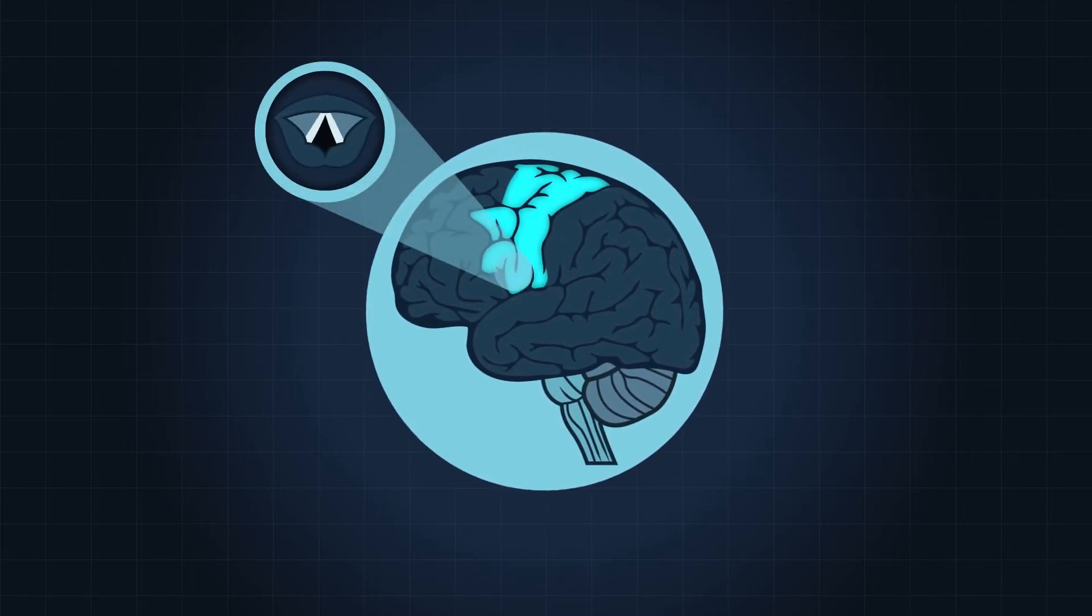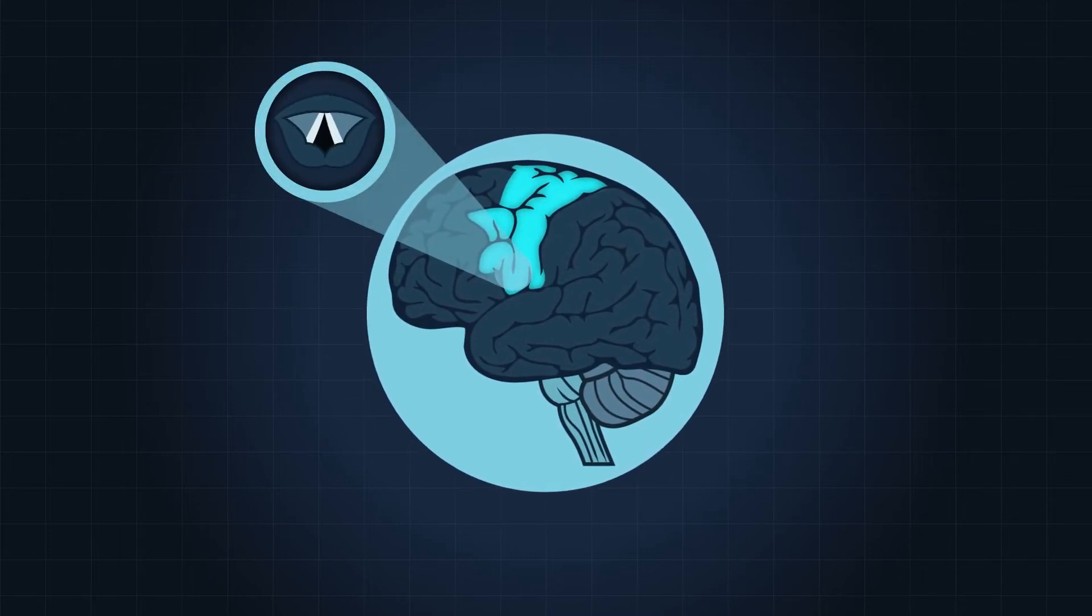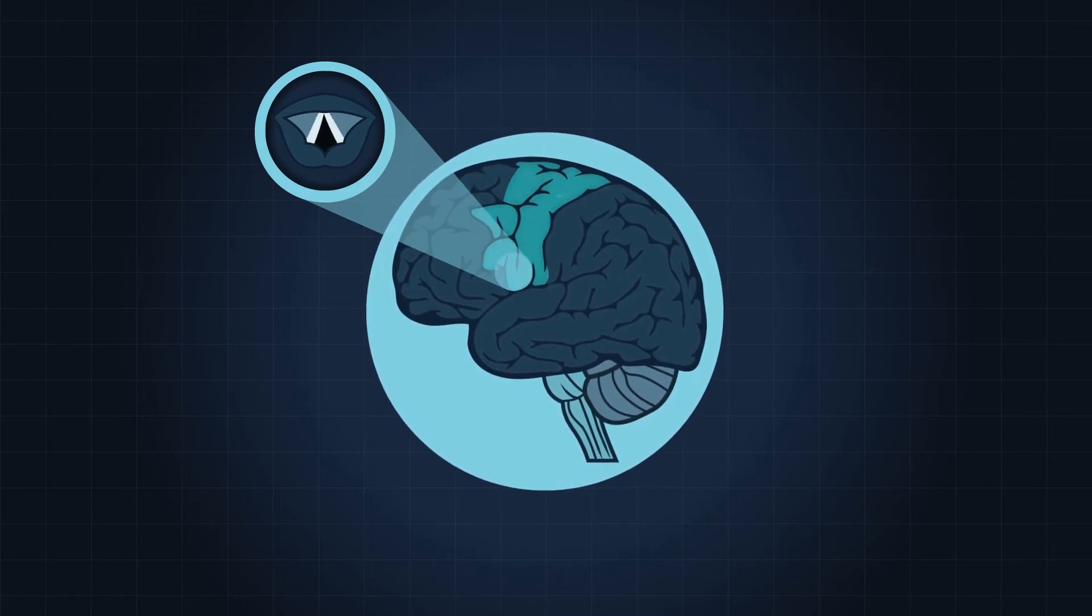There are separate, specialized areas in the motor cortex to control vocal cords and other muscles of speech, but it's not where the words are formed.